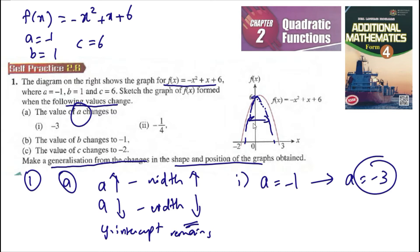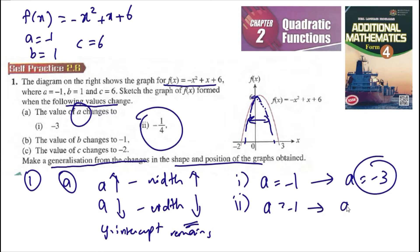The width decreases. Second, if a goes from negative 1 to negative 1 over 4, so a increases, the width also increases. The y-intercept remains, so it will be something like this — y-intercept is still the same.